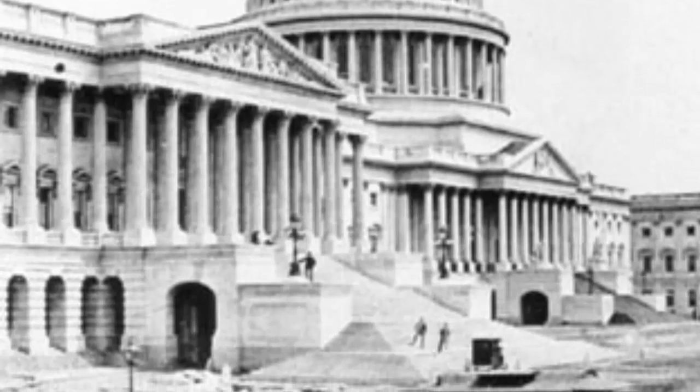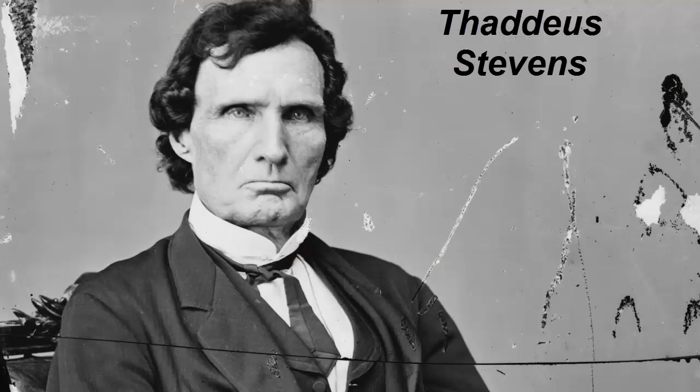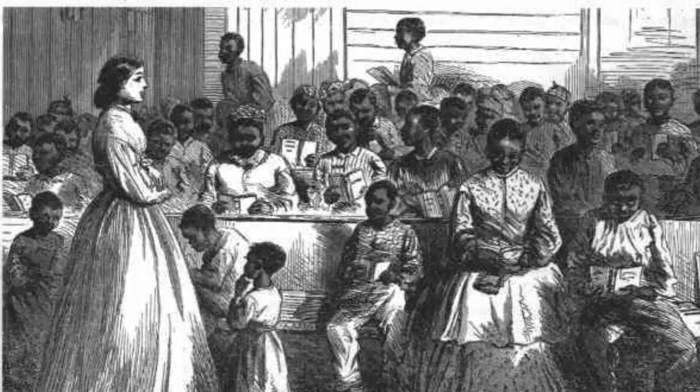Unfortunately, not everyone agreed with Lincoln's plan. Congress disagreed and had a plan of their own. The Radical Republicans in Congress refused to seat the officials that those three states sent to Washington, D.C. Led by Thaddeus Stevens from Pennsylvania and Charles Sumner from Massachusetts, they wanted harsh punishment for those who represented the Confederacy. They also wanted to help the former slaves get back on their feet. In short, they felt that Lincoln was too lenient on the Southern states.